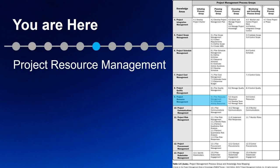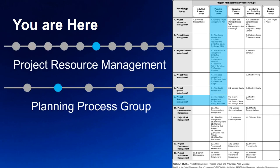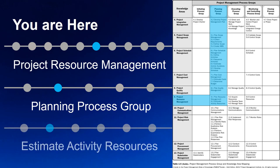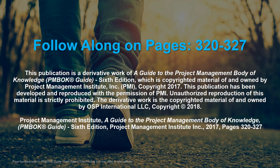This important process will help you estimate and identify the type and quantities of human resources, equipment, materials, and supplies required to perform each of the schedule activities and the project as a whole. We are in Project Resource Management, in the Planning Process group, at the second process: Estimate Activity Resources, defined as the process of estimating team resources and the type and quantities of material, equipment, and supplies necessary to perform project work. In the PMBOK guide, please turn to pages 320 to 327.